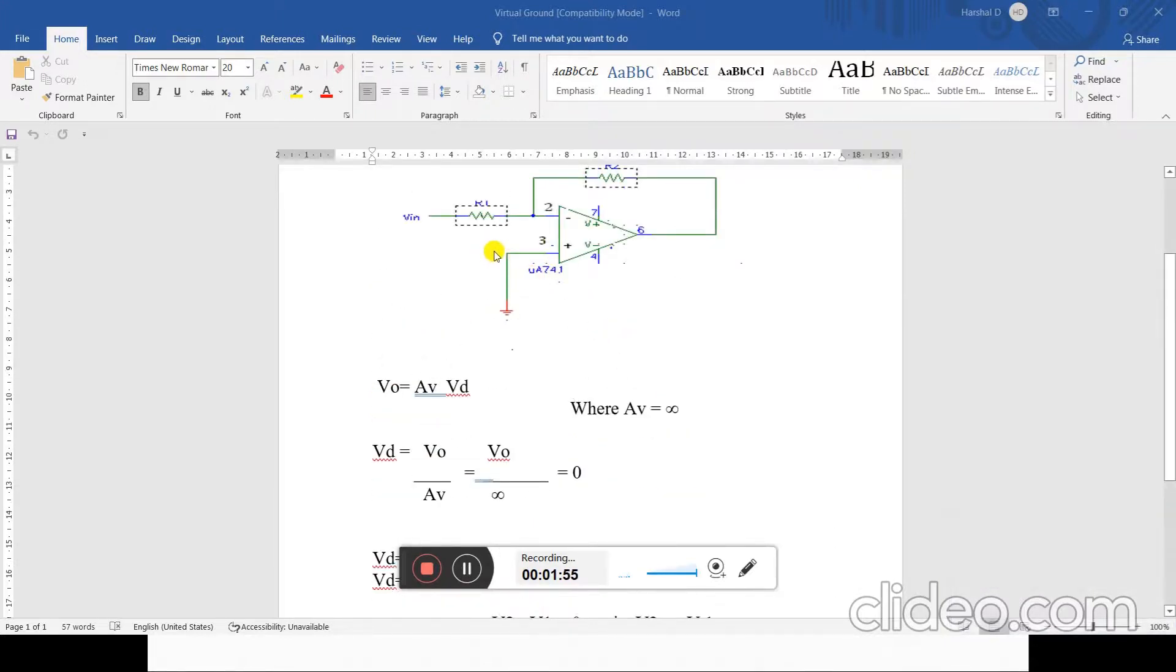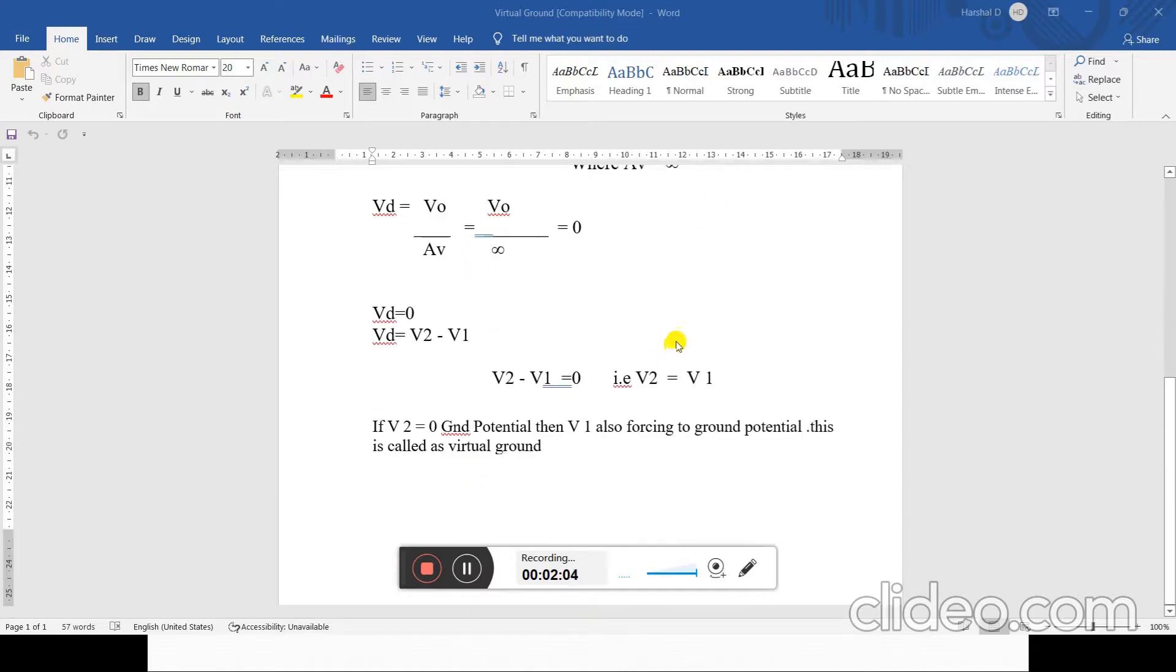As seen in this diagram, v2 is connected to the ground, that means v1 is also equal to ground potential. That means v2 is forcing v1 to ground potential, but actually v1 is not connected to the ground. This is known as the virtual ground concept.